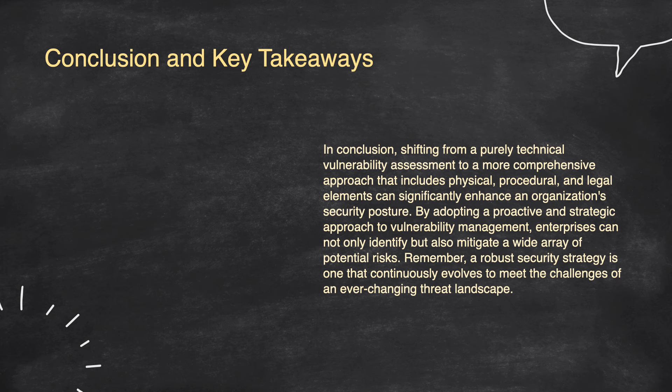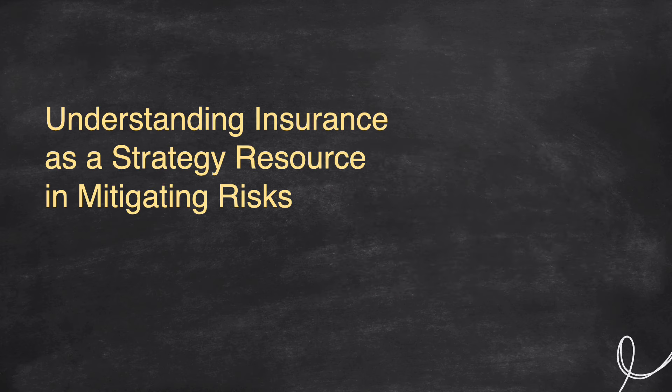That concludes the first topic. Now let's discuss the second topic: understanding insurance as a strategic resource in mitigating risks. Insurance can be a valuable resource in mitigating risks by providing financial protection against potential losses. When incorporated into a broader risk management strategy, insurance helps organizations manage the financial impact of unforeseen events such as security breaches, natural disasters, or other liabilities. It is important to choose policies that align with the specific risks an organization faces, ensuring coverage is adequate for potential threats. While insurance does not prevent risks, it can reduce the financial burden associated with them and support recovery efforts, making it a key component in a comprehensive risk management strategy.